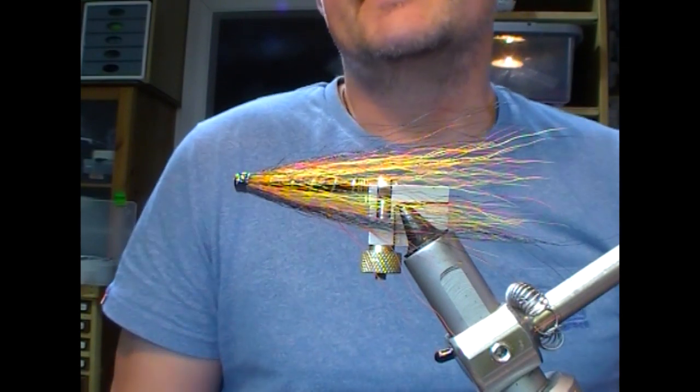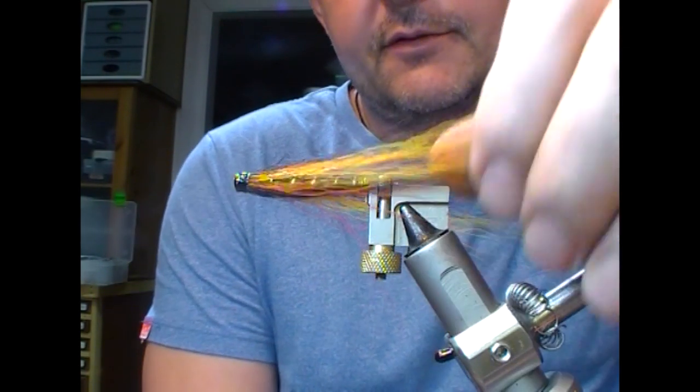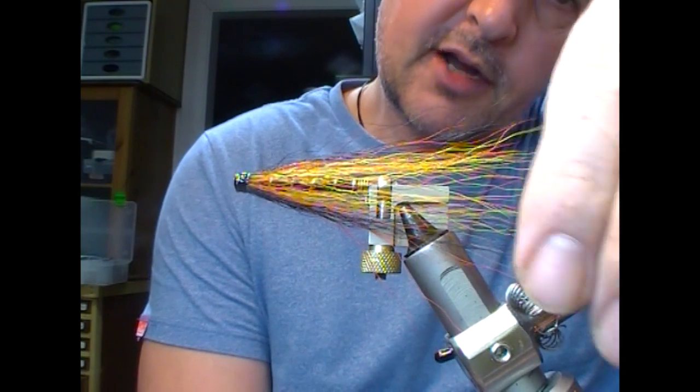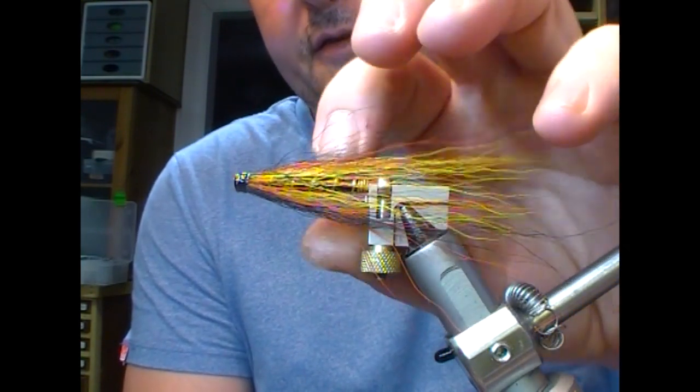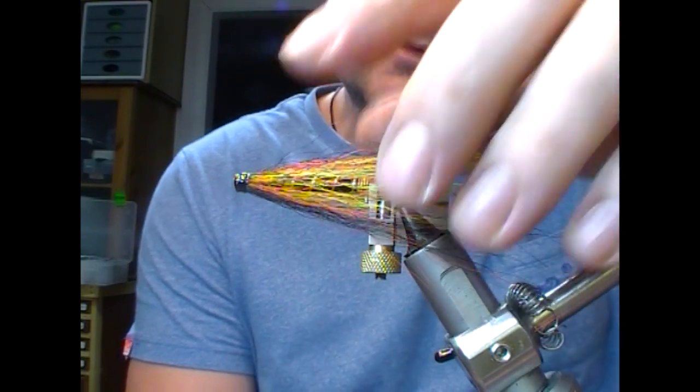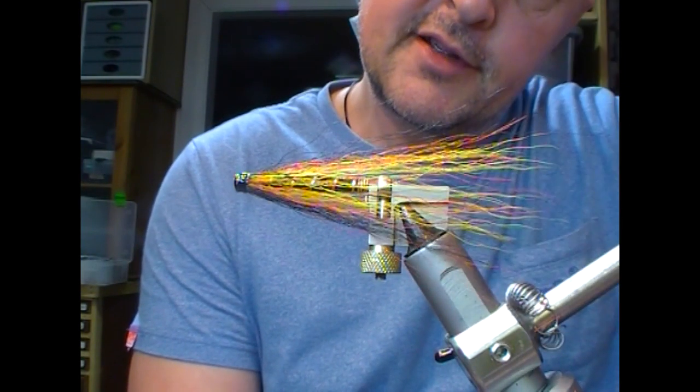But that is the original Willy Gunn on a copper slipstream. A fly that is, I'm sure, accounted for tens of thousands of salmon.